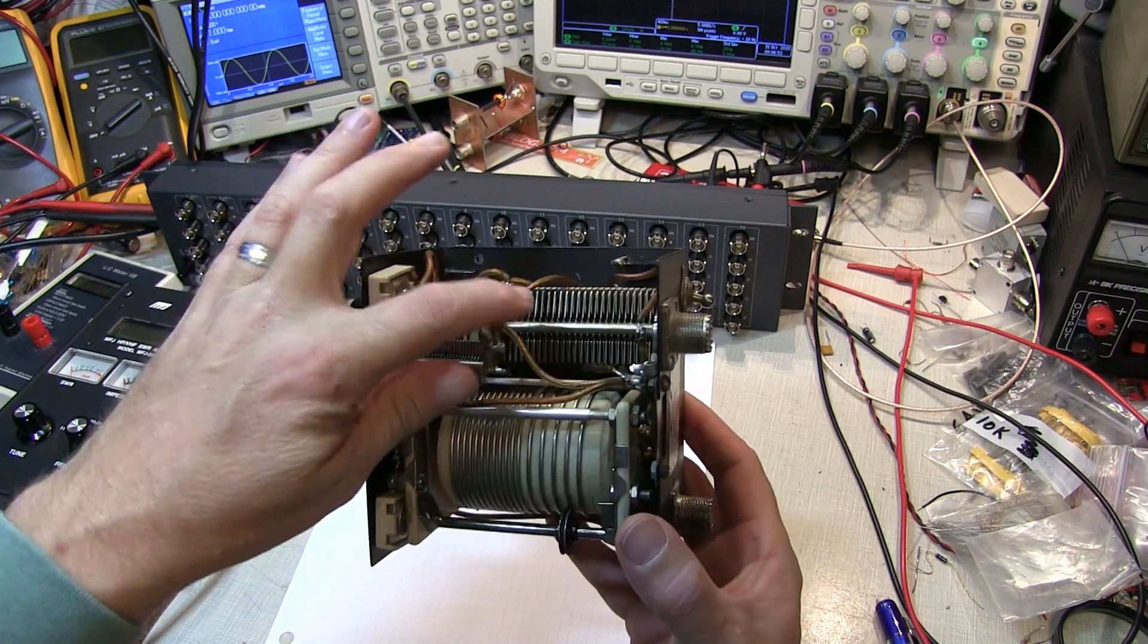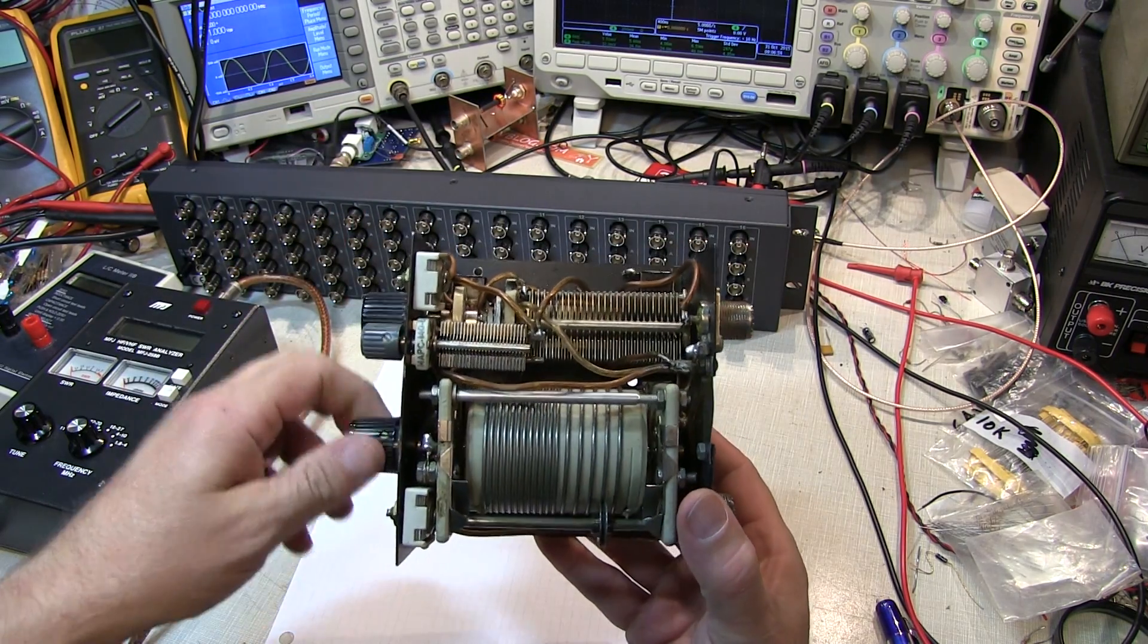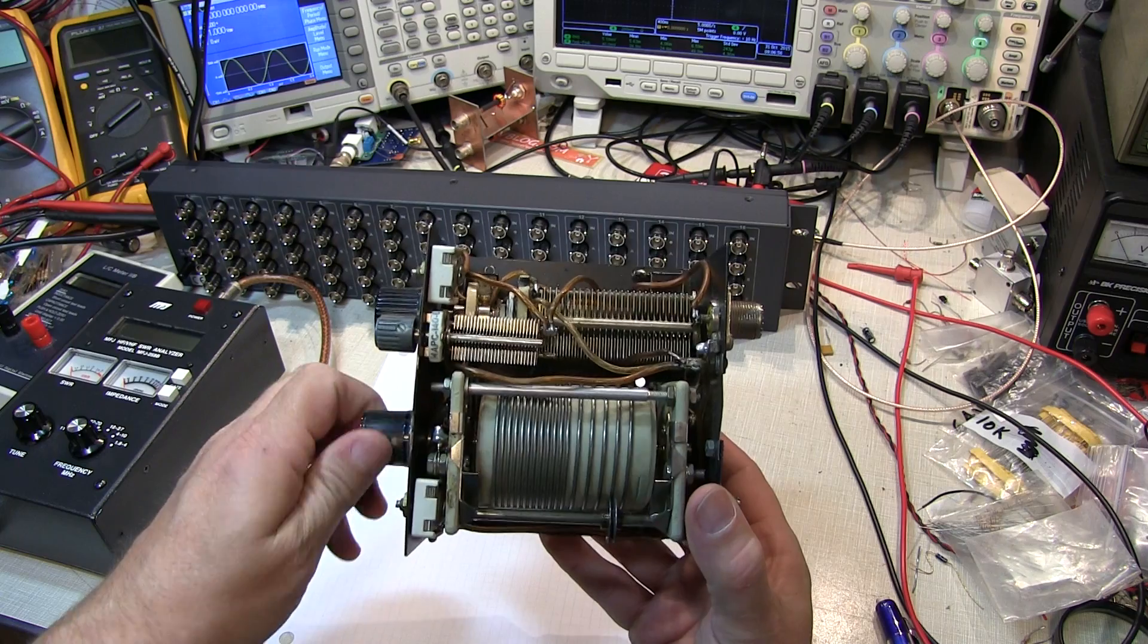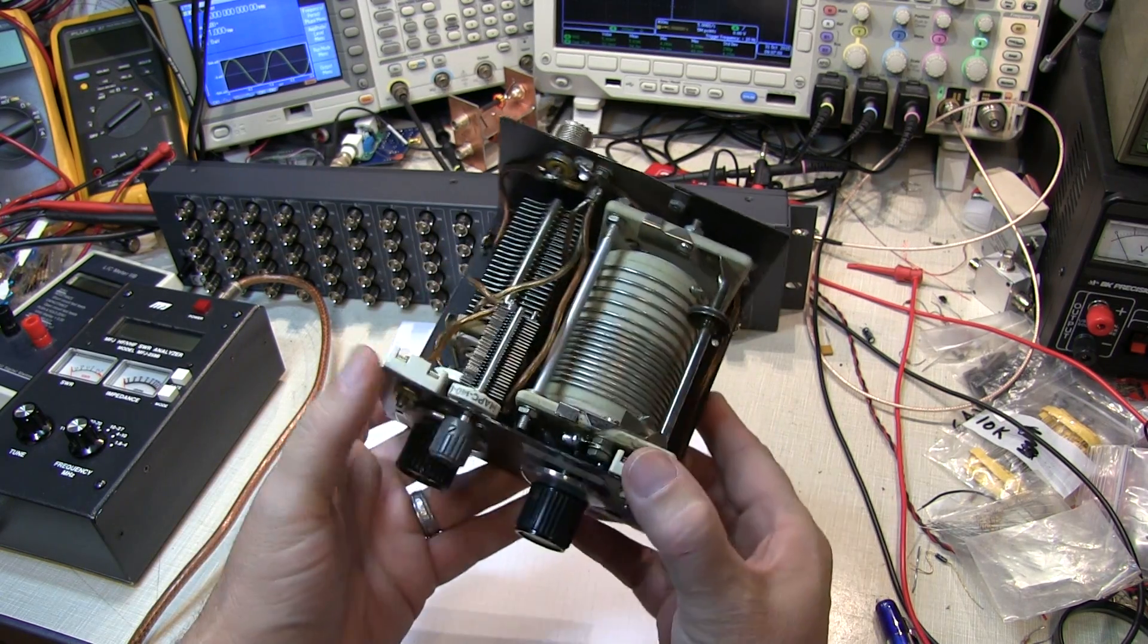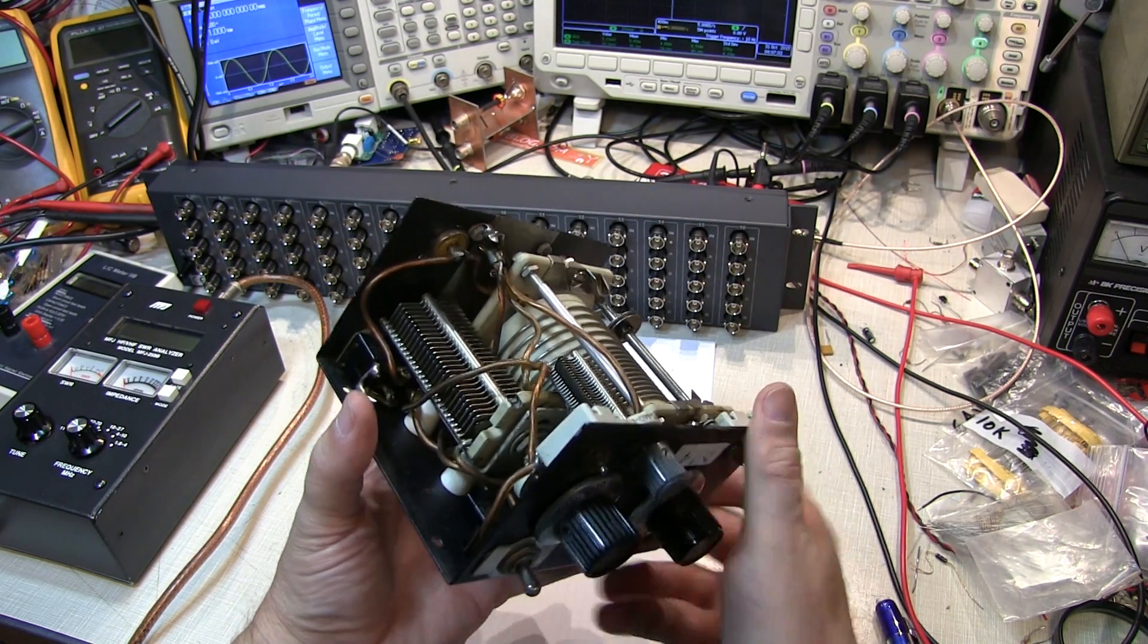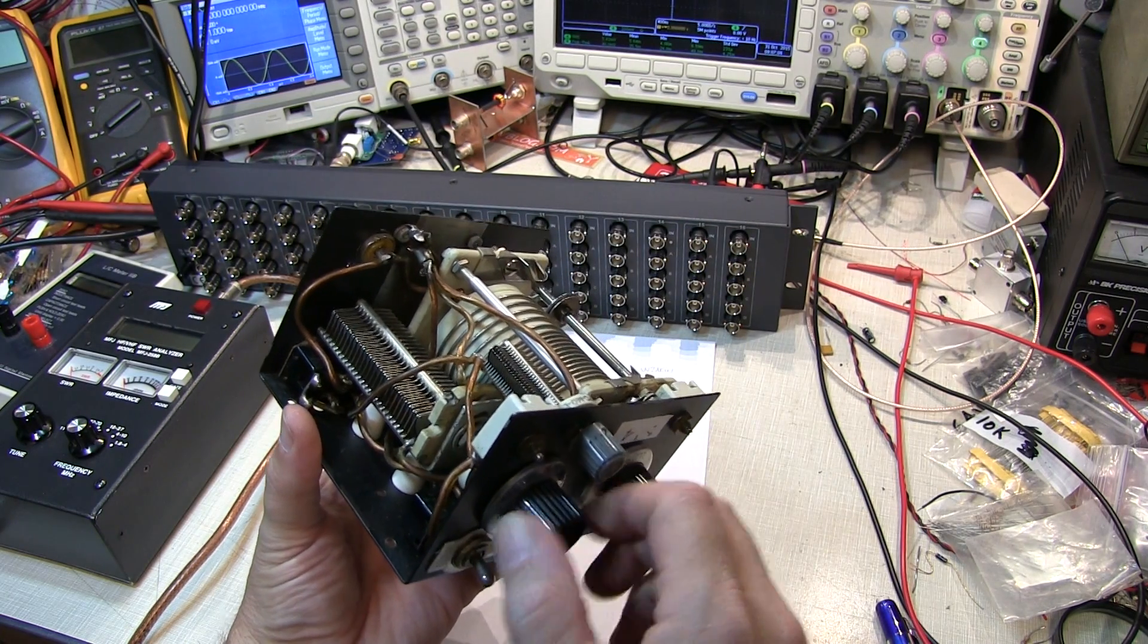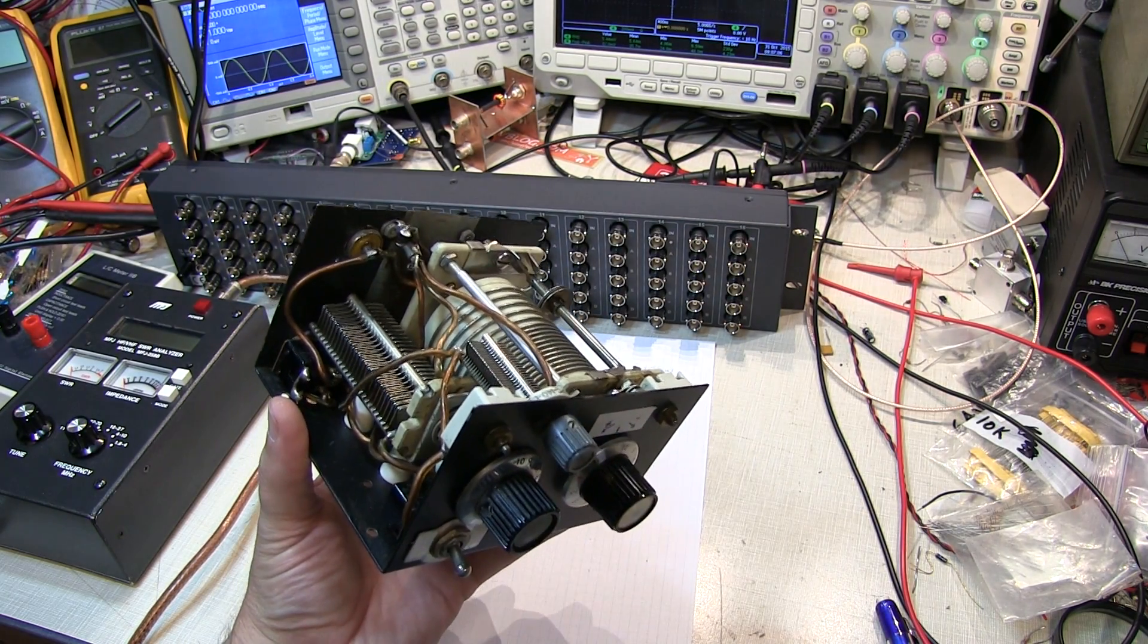So given that we've got two capacitors and an inductor, all variable, this is most likely a T or a pi network tuner. So I took the time to kind of trace out the schematic here, and it turns out it is actually a pi network tuner. So let's take a look at the schematic.